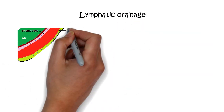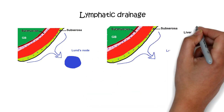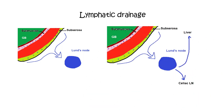The lymphatic drainage of the gallbladder drains into the cystic lymph node of Lund, also known as the Calot's lymph node or Mascagni's lymph node. This sentinel lymph node lies in the fork created by the junction of the cystic duct and the common hepatic duct. Efferent vessels from this lymph node go to the hilum of the liver and to the celiac lymph nodes. Subserosal lymphatic vessels also connect to the subcapsular lymphatic channels of the liver, which accounts for the frequent spread of carcinoma of the gallbladder to the liver.